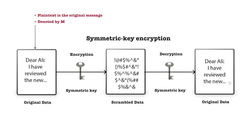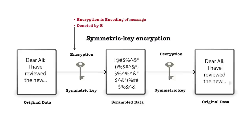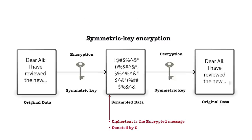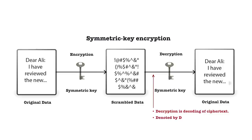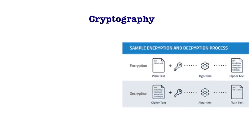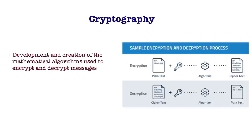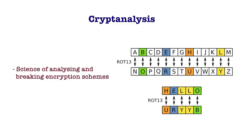First, we will discuss some basic terminologies. Plain text or clear text is the message, denoted by M. Encryption is the process of encoding the message, denoted by E. Ciphertext is an encrypted message, denoted by C. Decryption is the process of decoding ciphertext, denoted by D. Cryptography is most closely associated with the development and creation of mathematical algorithms used to encrypt and decrypt messages. Cryptology is the combination of cryptography and cryptanalysis, which is the science of analyzing and breaking encryption schemes.